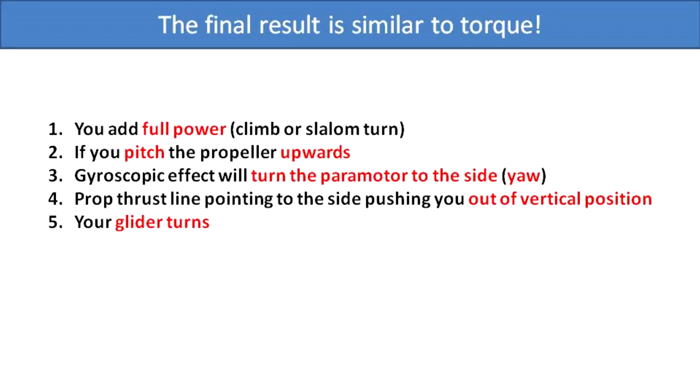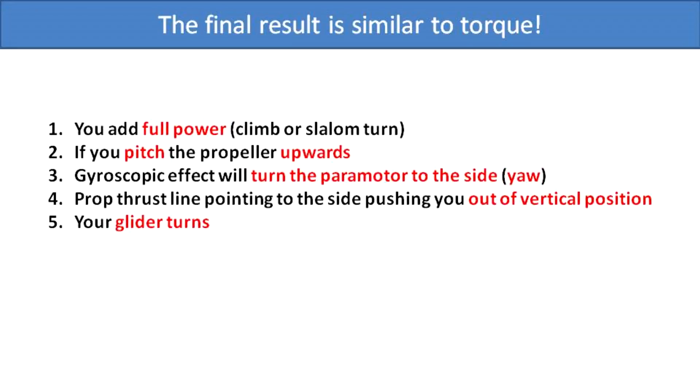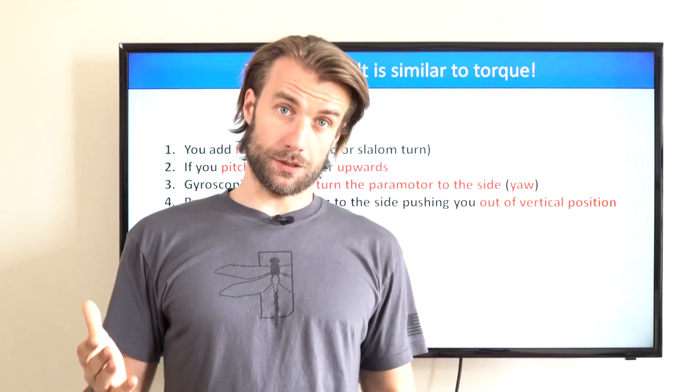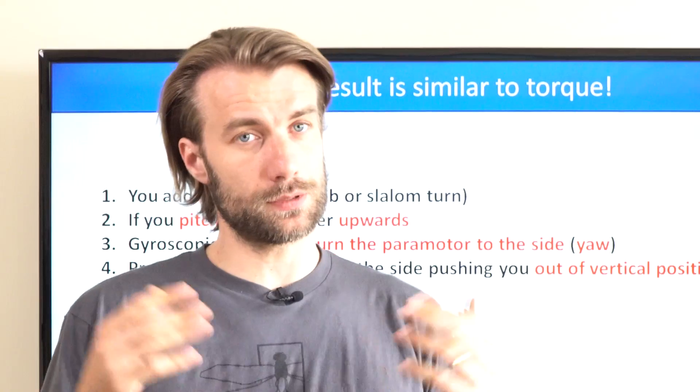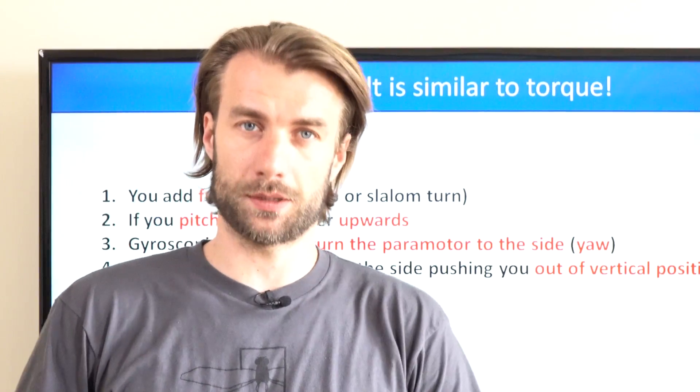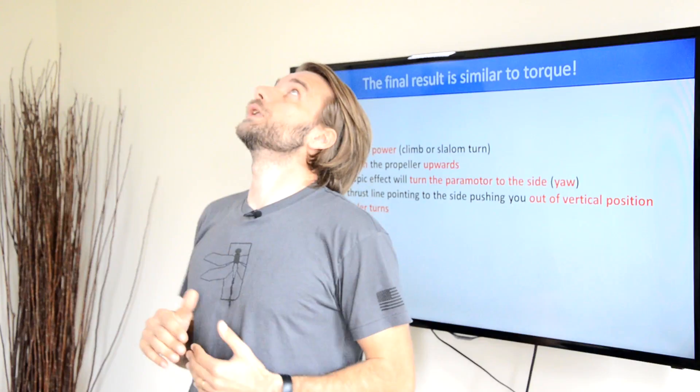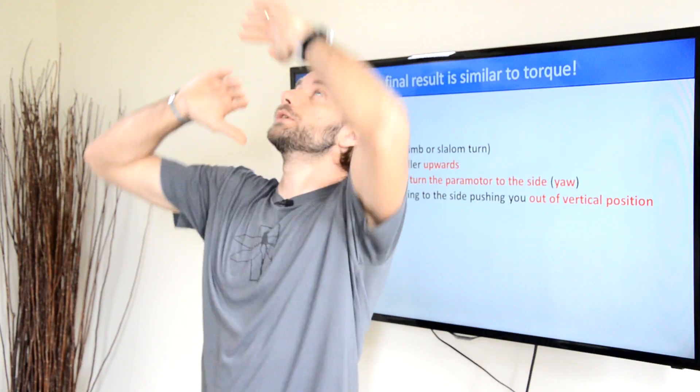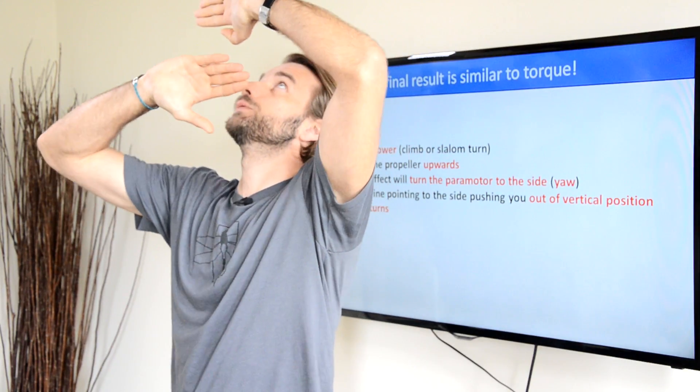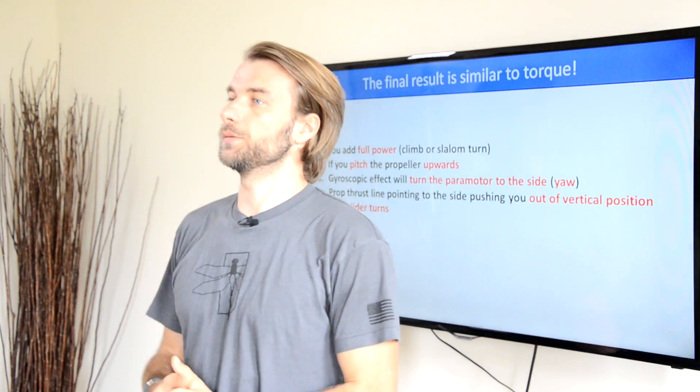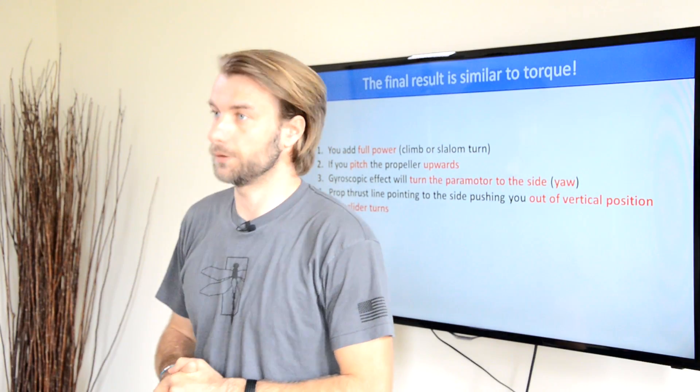As both the gyroscopic effect and the torque effect are causing the glider to turn to the same direction, it is very easy to confuse these two. And this was exactly what happened to this respected pilot a few years ago when he was testing the scout. He was looking into the glider, adding full throttle and observing how much the angle between his paramotor and the glider changed. He was, in fact, observing the gyroscopic effect, not the torque.